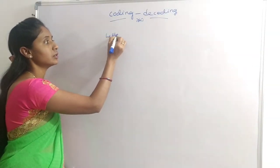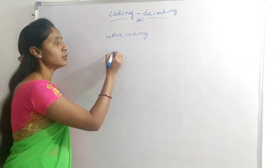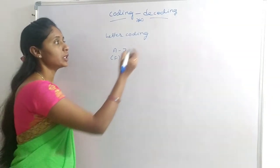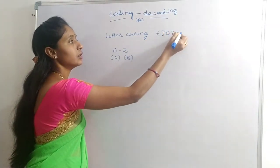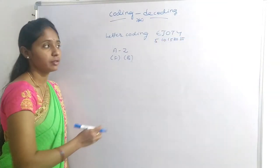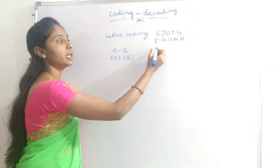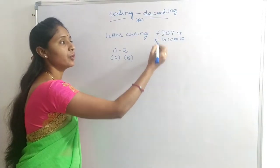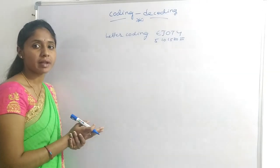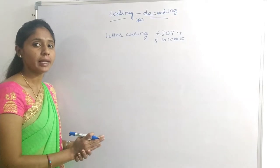For letter coding, we should know A to Z forward and backward ranks. For that, we have one technique: EJOT — representing positions 5, 10, 15, 20, 25. We can find the nearer alphabet ranks by remembering this. For example, if we have D, we can easily find it is 4, because E is 5, so the letter before it is 4.